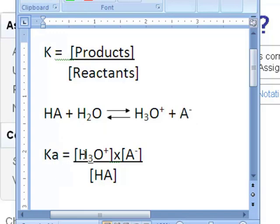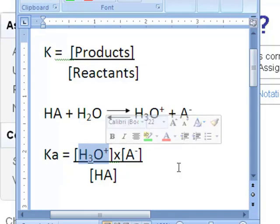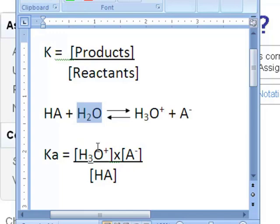And it's written as the H3O+ ion concentration times the A- concentration divided by the concentration of the acid molecule. Again, water is not included in the equilibrium constant.